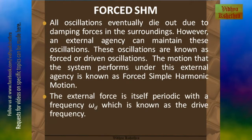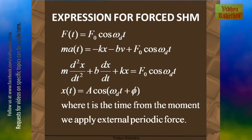The external force is itself periodic with a frequency ω_d, which is known as the driving frequency. At first, the oscillation takes place at the natural frequency of oscillation, but after that, when oscillation takes place due to the external force, the frequency of oscillation becomes ω_d. Now we shall see the expression for forced simple harmonic motion. The driving force is given by f(t) equal to f₀ cos(ω_d·t), since the driving force is also periodic.